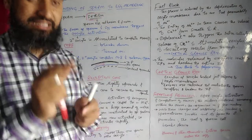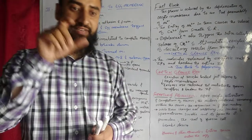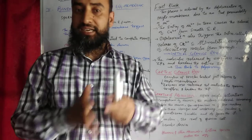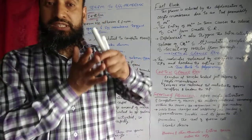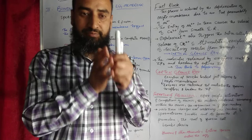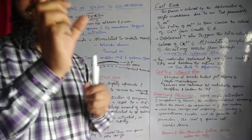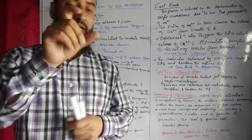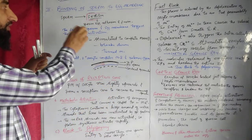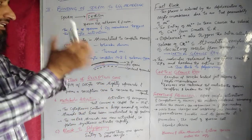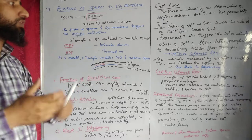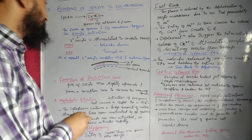You know that the secondary oocyte, when it is released during ovulation, was released in the secondary oocyte stage. That is, the process was arrested somewhere in meiosis II at metaphase II. Now, oocyte activation means the secondary oocyte is stimulated to complete meiosis II.